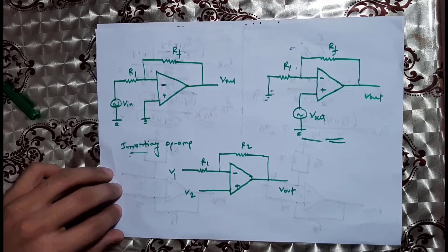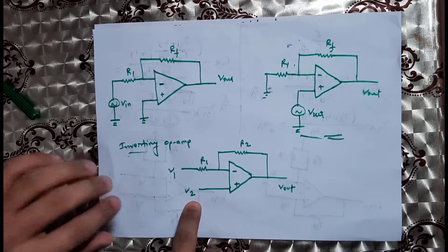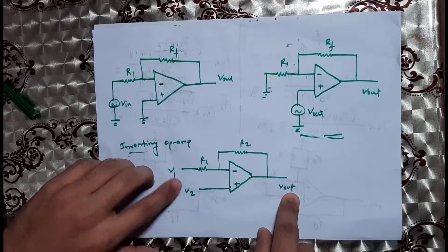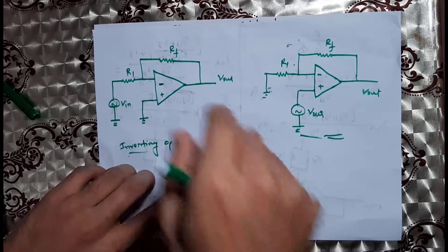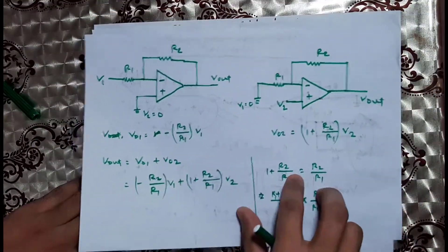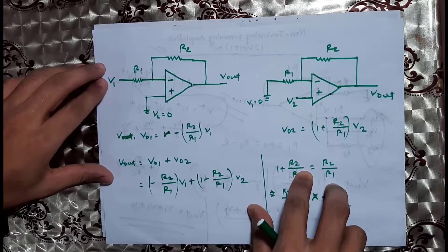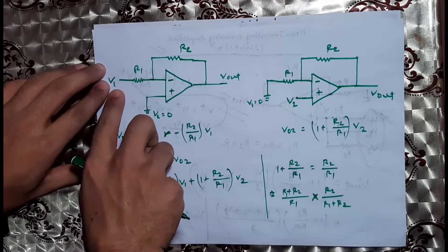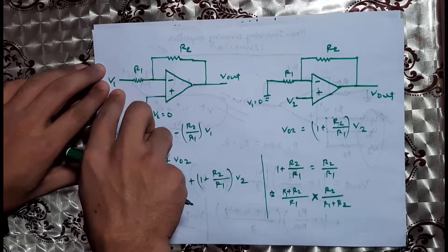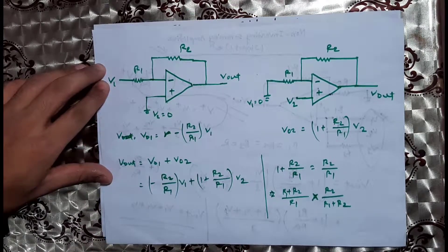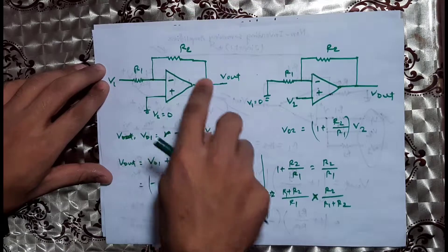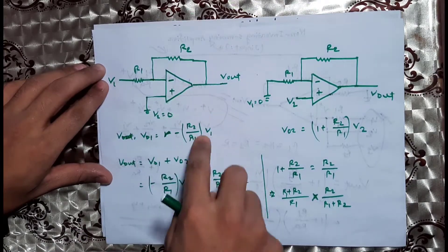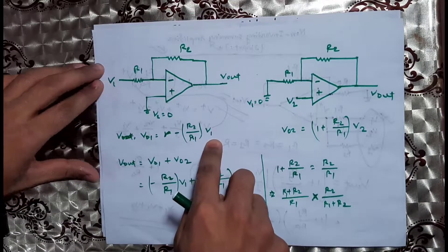This circuit is the differential amplifier circuit. When we look at the output, we apply superposition. First, V1 is active and V2 is set to zero — that means we ground V2. The output voltage V0 in this case follows the inverting amplifier gain, which is minus R2 divided by R1, multiplied by the input voltage V1.